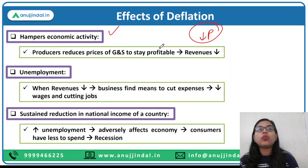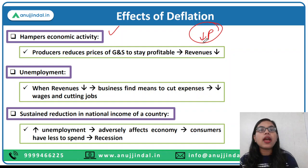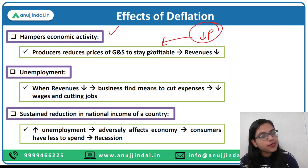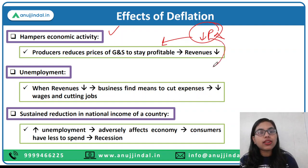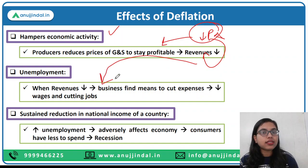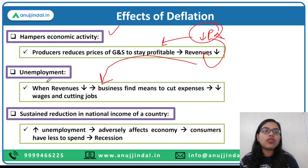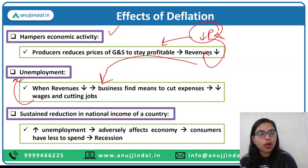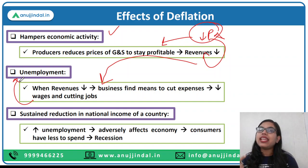The first effect is that deflation is going to hamper economic activity. If prices of goods and services go down, in order to stay profitable, producers will cut down their cost. They will have to sell at a lower price, resulting in lower revenue. Because of lower revenue, businesses will cut their expenses — one way is to reduce wages or cut down jobs. This will result in unemployment, and because of unemployment, it will adversely affect the economic growth or the national income of the country.